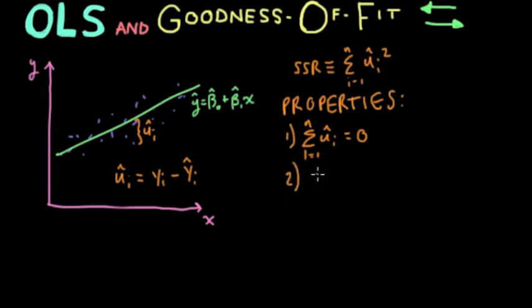Our second property that's very important for OLS is the sum of all the residuals multiplied by the x's will be equal to zero. Now, x is our independent variable. And essentially what property two is saying is that the independent variable is not correlated with the residual.